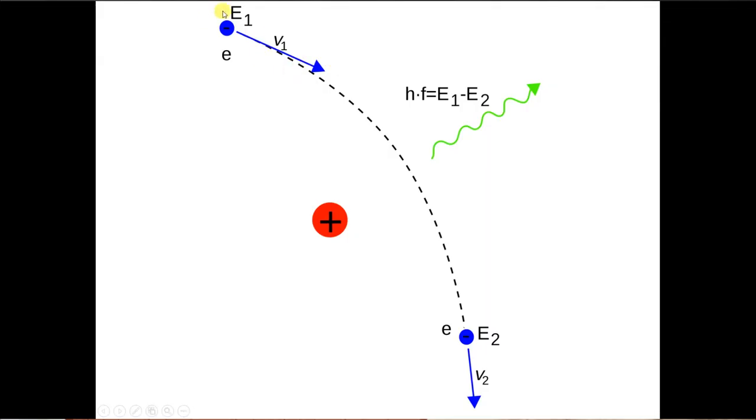As you can see in this diagram, an electron with energy E sub 1 is traveling with a velocity V sub 1 and as it is moving towards a positively charged nucleus, it is being attracted by it. But because it has sufficient velocity to overcome this attraction, it is not able to fall into the nucleus, but it simply moves on by changing its direction.